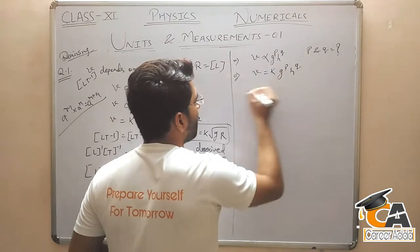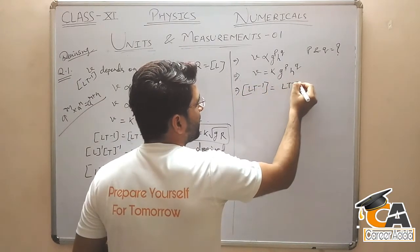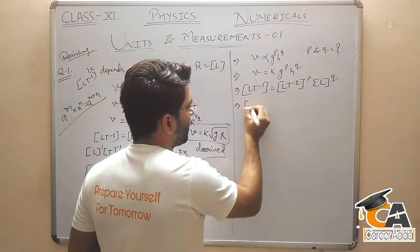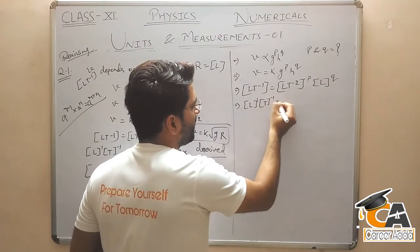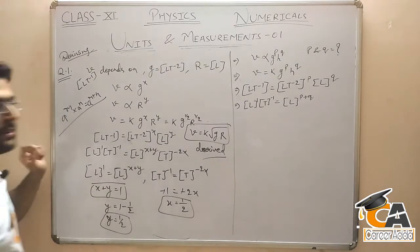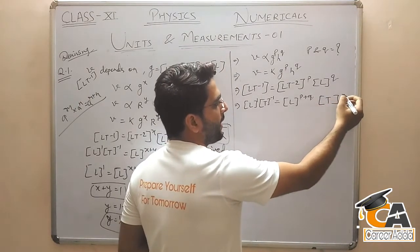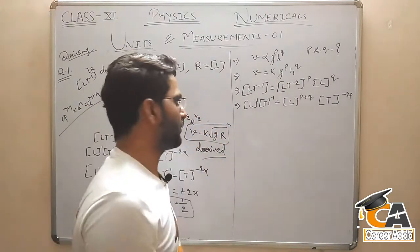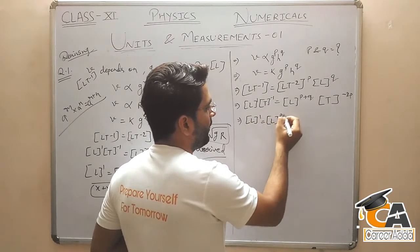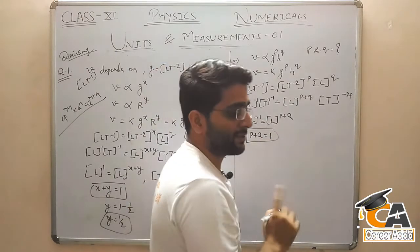अब आप solve करो: LT⁻¹ = constant × (LT⁻²)^P × L^Q. Next, separate करो: L to the power 1, T to the power minus 1, यहाँ मिलेगा L to the power P plus Q, T to the power minus 2P. Powers add हो जाएंगे. Next: P plus Q is equal to 1.